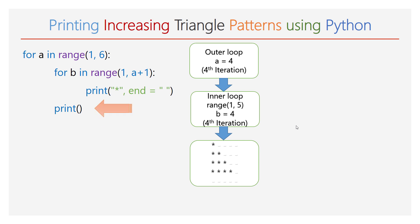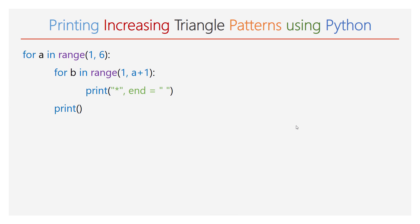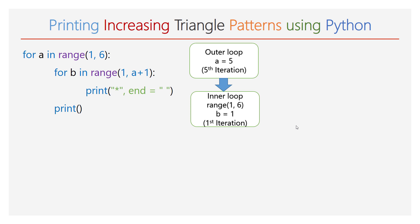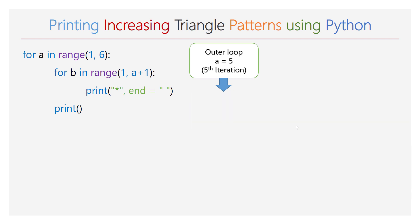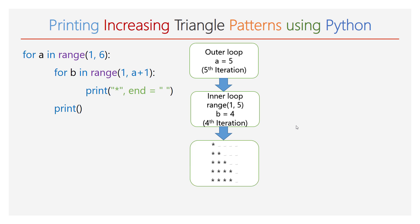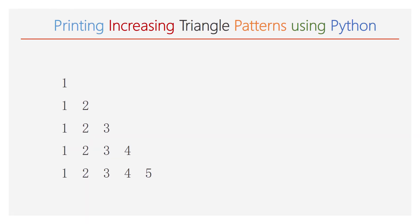Next, the empty print function is executed and the cursor will take a new line. Again, the execution goes to the outer for loop. Now the value of a will be 5. The range of b will be 1 to 6, so the inner for loop will iterate for 5 times. During each iteration, 1 star will be printed. At the end of the inner for loop, 5 stars will be printed in the fifth line. Next, an empty print function will be executed, and the execution will come out of both the outer and inner for loops.